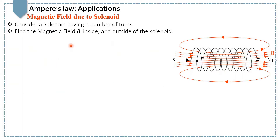In this lecture, we will discuss the magnetic field due to a solenoid. A solenoid is a long cylindrical coil of wire that consists of a large number of turns bound together very tightly. When current passes through it, it behaves like a bar magnet: one end behaves like a north pole and the other end like a south pole. To find the magnetic field inside and outside of the solenoid, we apply Ampere's law: closed path integral B dot dL equals mu naught I.